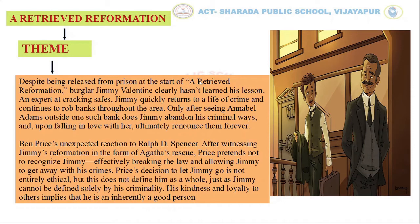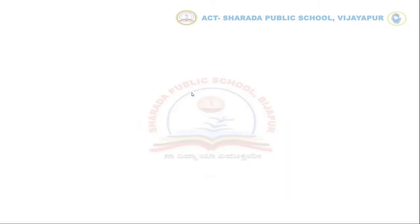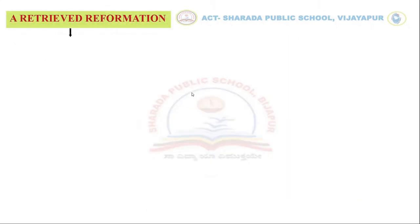Price pretends not to recognize Jimmy, effectively breaking the law and allowing Jimmy to get away with his crimes. Price's decision to let Jimmy go is not entirely ethical, but this doesn't define him as a whole — just as Jimmy cannot be defined solely by his criminality. His kindness and loyalty to others implies that he is inherently a good person.